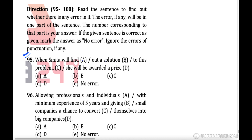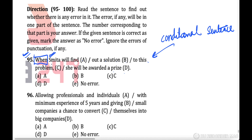The question is: 'When Smita will find out a solution to this problem, she will be awarded a prize.' You have to find the erroneous part. When a sentence starts with 'when,' it is a conditional sentence. This part with 'when' is the conditional clause, and 'she will be awarded a prize' is the main clause. In conditional sentences, the conditional clause should never be in future tense.